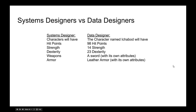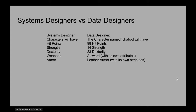To break it out further: a systems designer determines that characters have hit points, strength, dexterity, weapons, and armor. The data designer then says a character named Ichabod has 98 hit points, 14 strength, 23 dexterity, a sword with its own attributes and numbers, and armor with its own attributes. The systems designer generally does not deal with individual numbers — they deal with interactions. The data designer deals with the individual numbers.